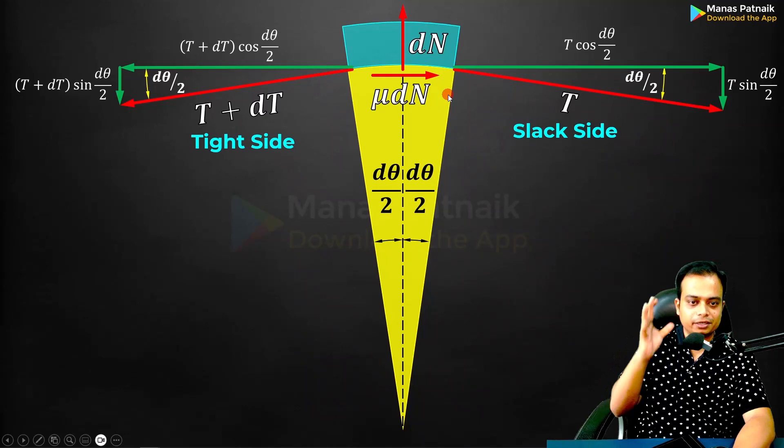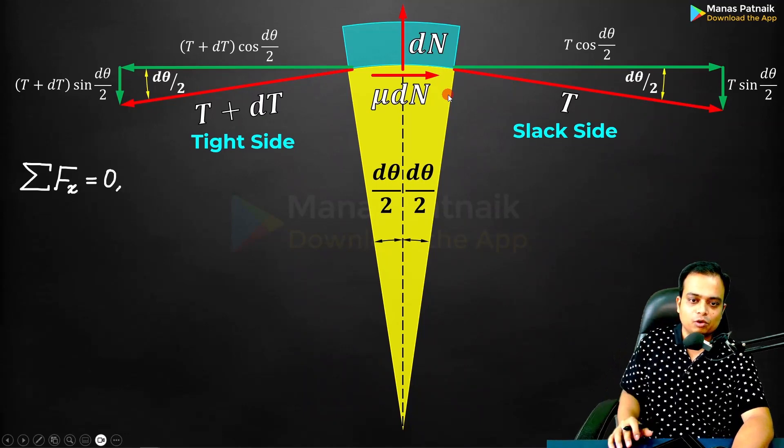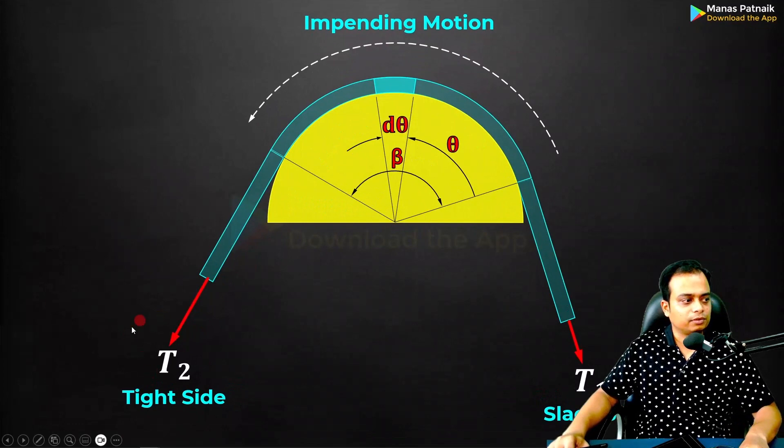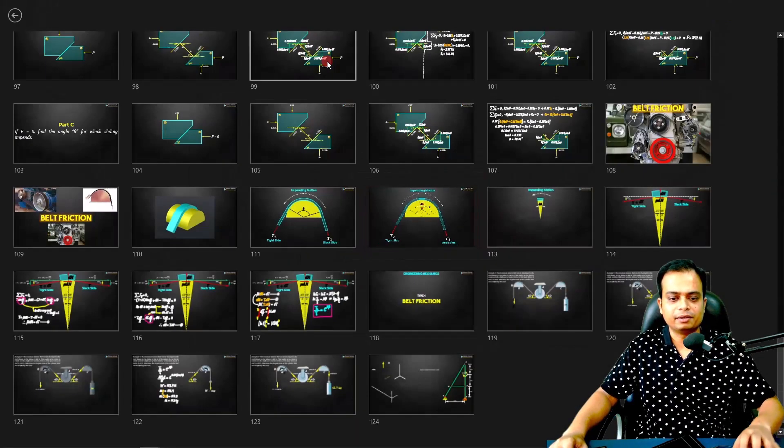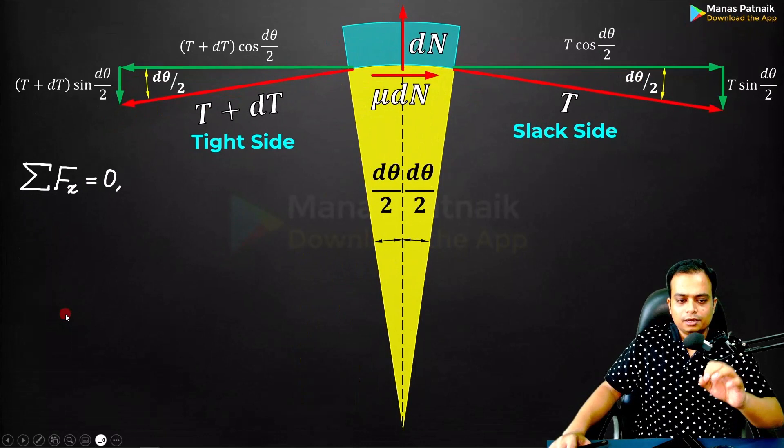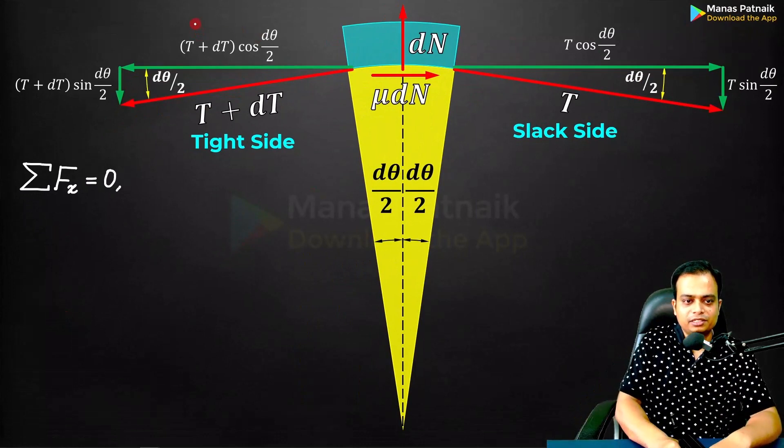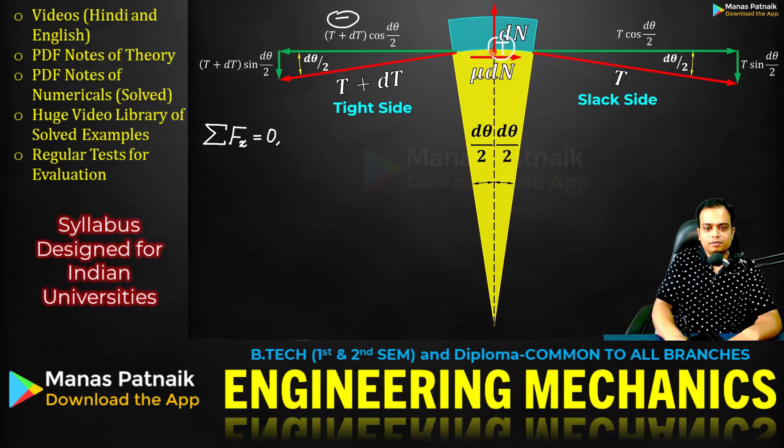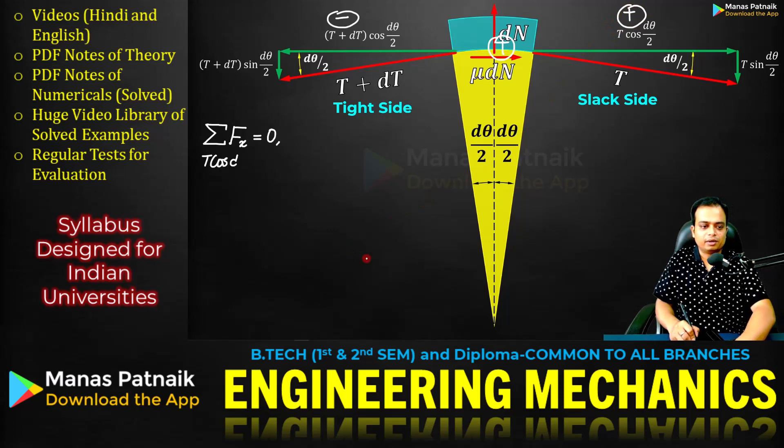Now the mechanics begins. Let's go for summation Fx = 0. We want to know about that force T2 which is sufficient for motion to impend along this direction. It is this force that we're interested in. Let's begin the analysis. Summation Fx = 0. This is left-hand side negative. This is μdN right-hand side positive. T cos(dθ/2) right-hand side positive. Let me write it down.